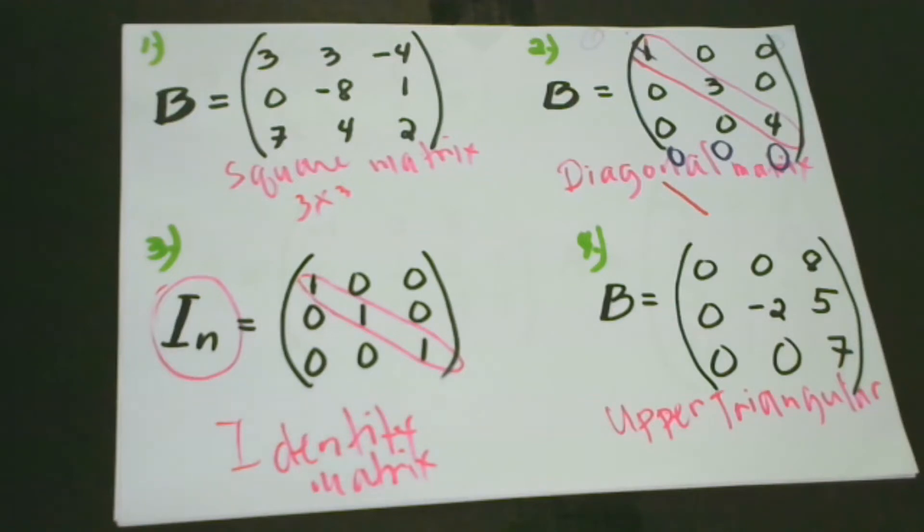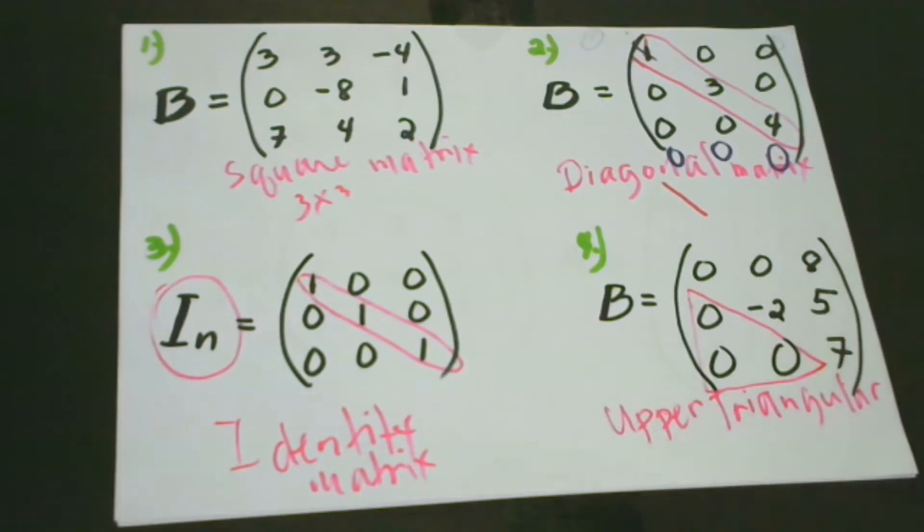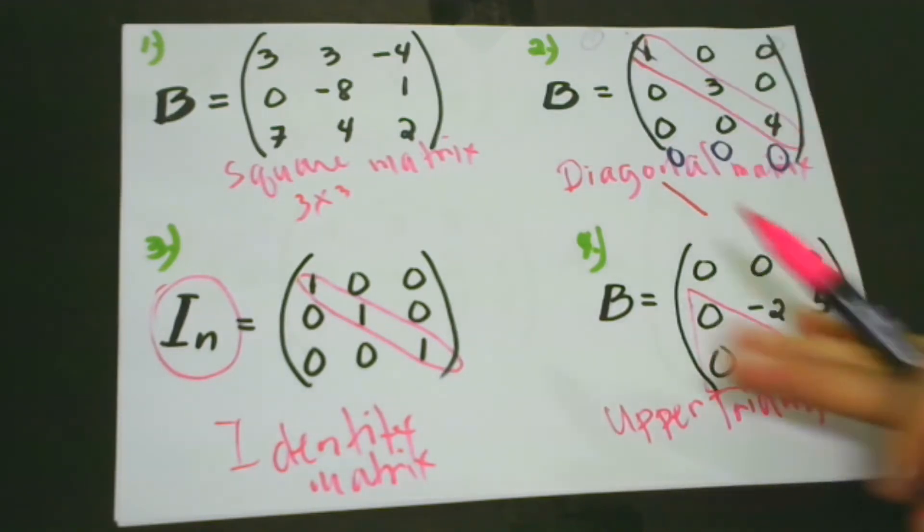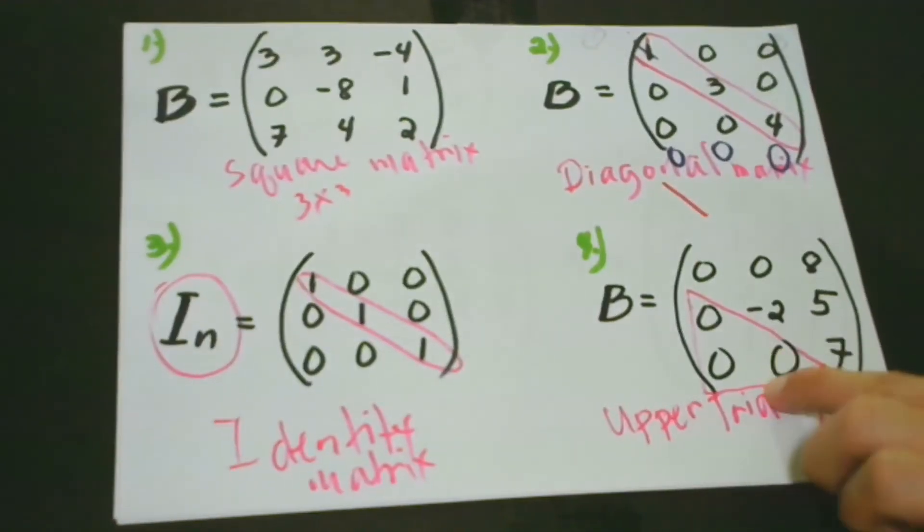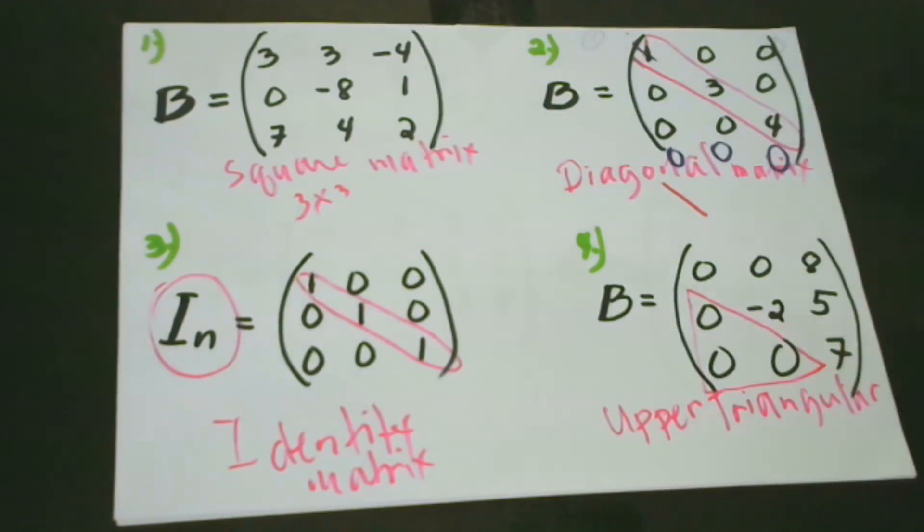As you could see, we can find the number of zeros here. The elements which are 0 and it forms a triangle. If we are going to examine, this part, this part are all 0. And the upper part is not all 0.